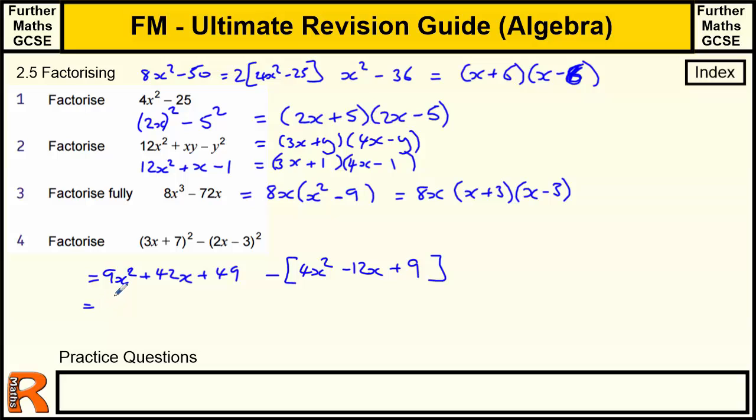Then minus 3 squared is plus 9. We're going to take all that away. This is the same as 9x² and then minus 4x². I'm going to do it one section at a time. We've got plus 42x, and then we're taking away minus 12x, which is the same as plus 12x. Then we've got 49 take away 9. So we've got 5x² plus 42 plus 12, which is plus 54x, and then 49 take away 9 is plus 40.